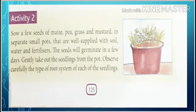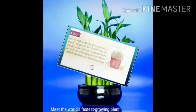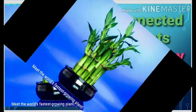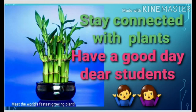This is all about today's content, dear students. I am leaving you with an interesting fact: the fastest growing plant on earth belongs to the category of herb and is considered a grass — but the tallest one is the bamboo plant. Stay connected with plants. Have a very good day, dear students.